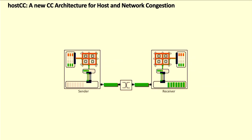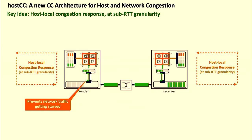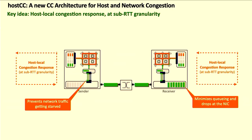Host CC is a new congestion control architecture that handles host congestion along with network congestion. The key idea is a sub-RTT granularity host local congestion response — allocating host resources between network traffic and host local traffic. At the sender, host CC's host local congestion response ensures that network traffic is not starved, even at sub-RTT granularity. At the receiver, it minimizes queuing and packet drops at the host, modulating host resources allocated to network traffic at sub-RTT granularity so that NIC queues are drained at the same rate at which packets arrive.